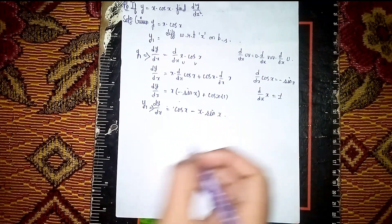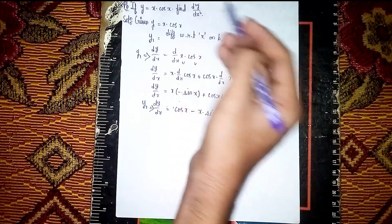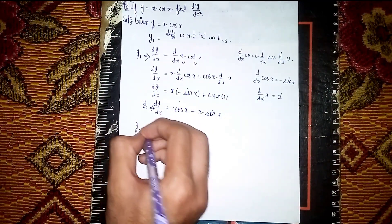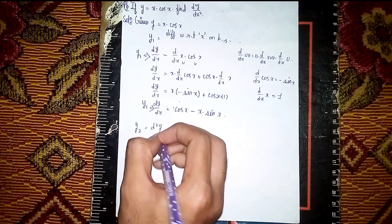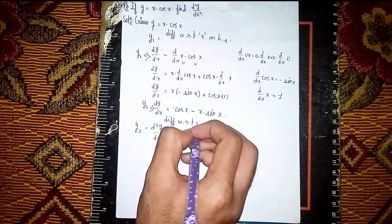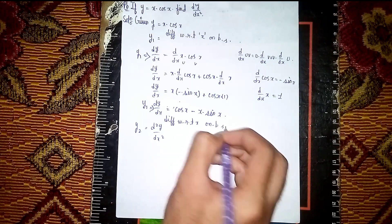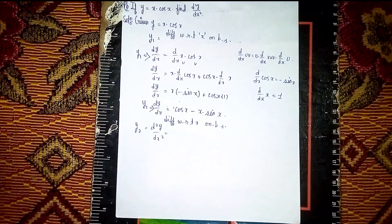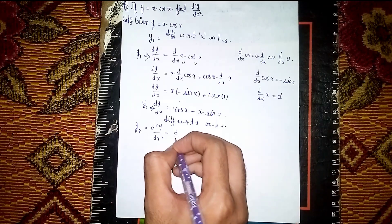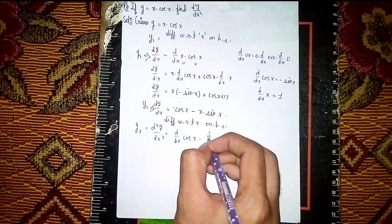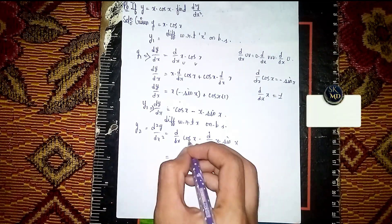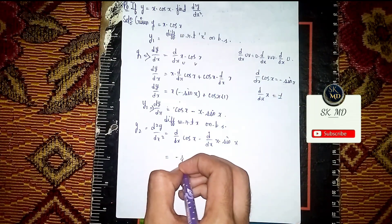Now we have to differentiate again, as the question is asking for d squared y by dx squared. So y2 is equal to d squared y by dx squared. Differentiate with respect to x on both sides again — double-time differentiation. So it becomes d/dx of cos x, minus d/dx of x into sin x.